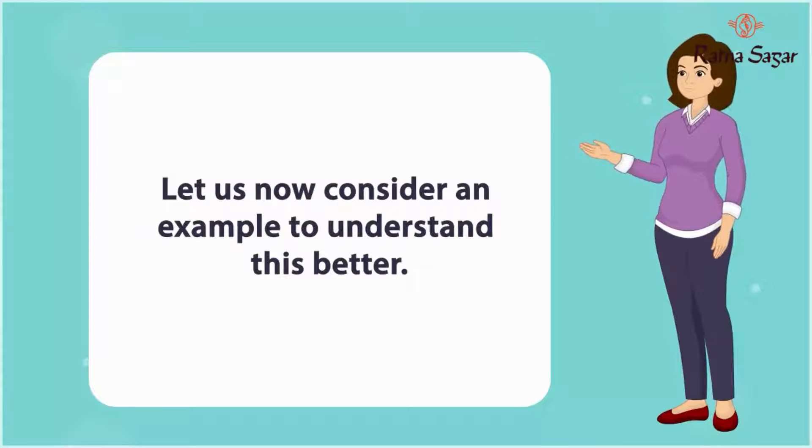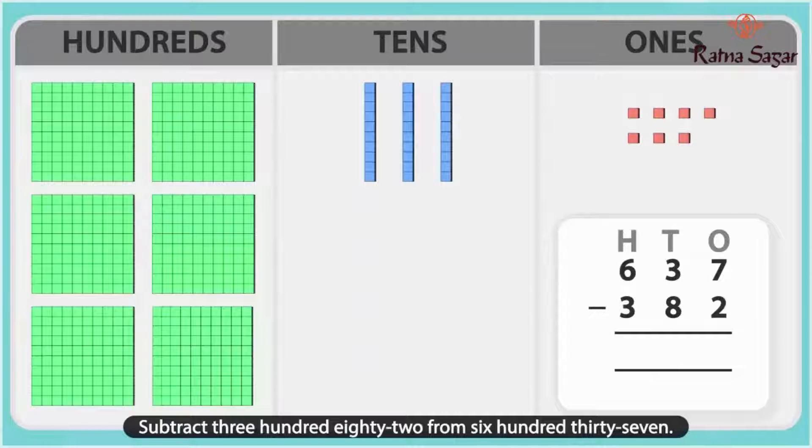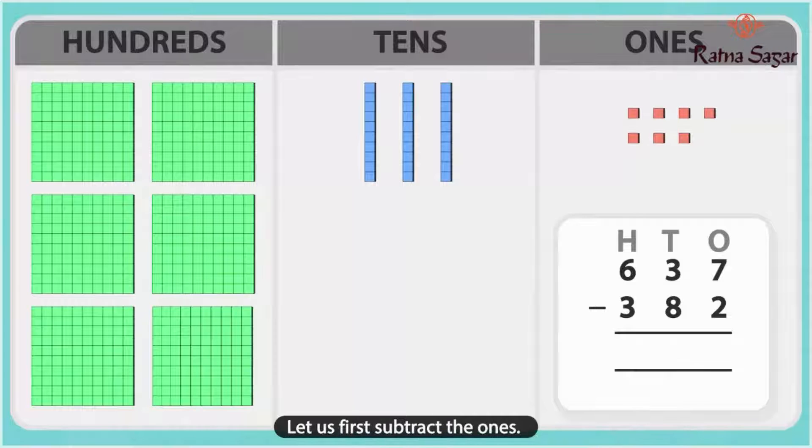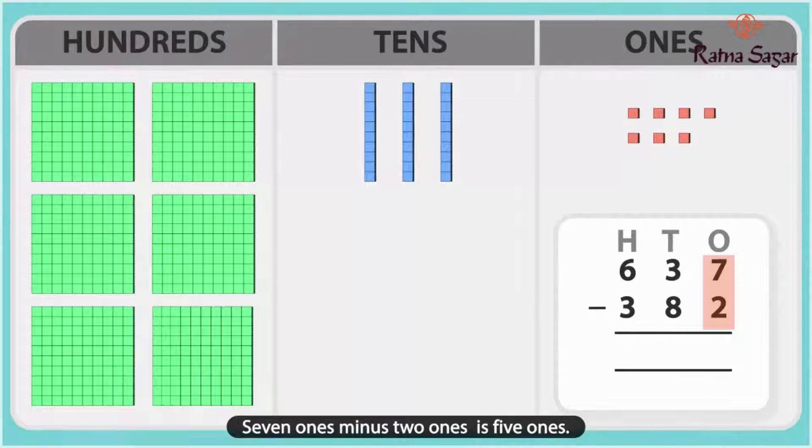Let us now consider an example to understand this better. Subtract 382 from 637. Let us first subtract the ones. 7 ones minus 2 ones is 5 ones.